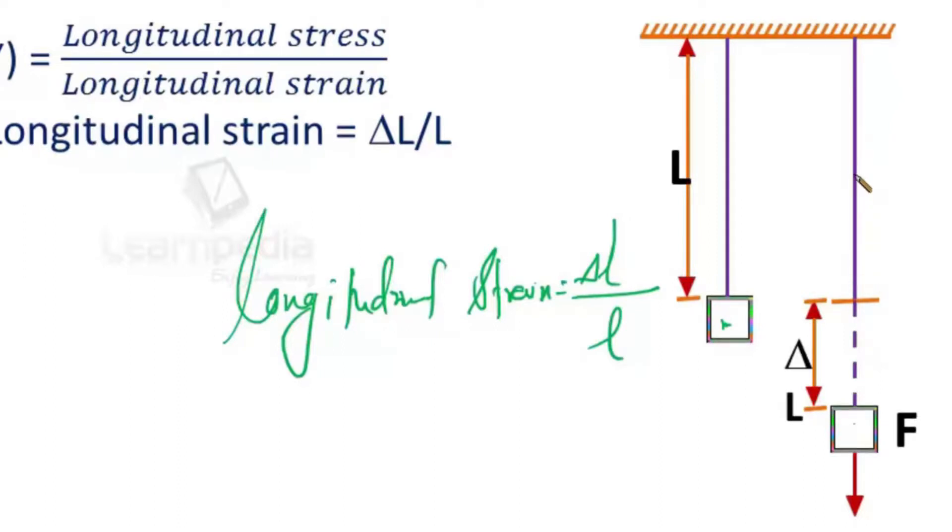Same tension is generated everywhere as we can safely neglect mass of this thin wire. So if A is the cross-section, then corresponding longitudinal stress would be applied force divided by the cross-section area.